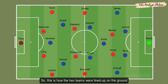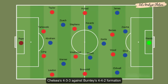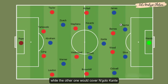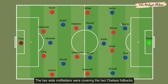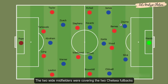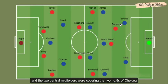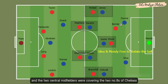This is how the two teams were lined up whenever Chelsea tried to build their play from the back — Chelsea's 4-3-3 against Burnley's 4-4-2. One of Burnley's front two would press the centre-back on the ball while the other would cover N'Golo Kante. The two wide midfielders covered the two Chelsea fullbacks and the two central midfielders covered the two number 8s of Chelsea.